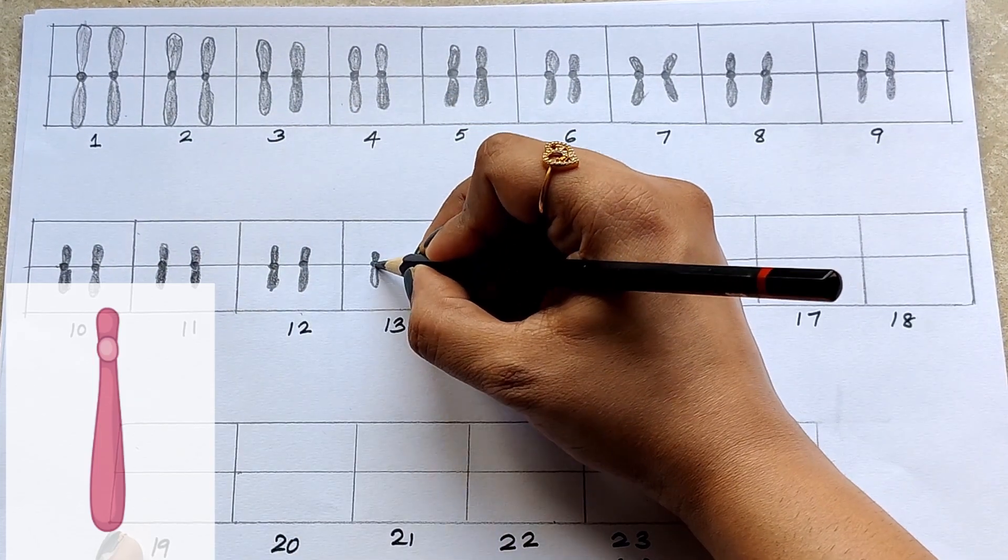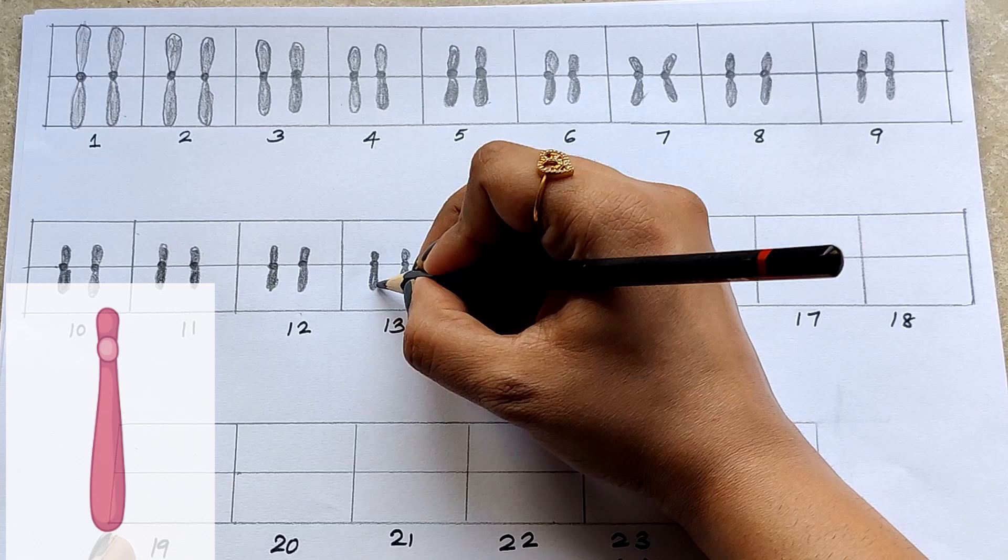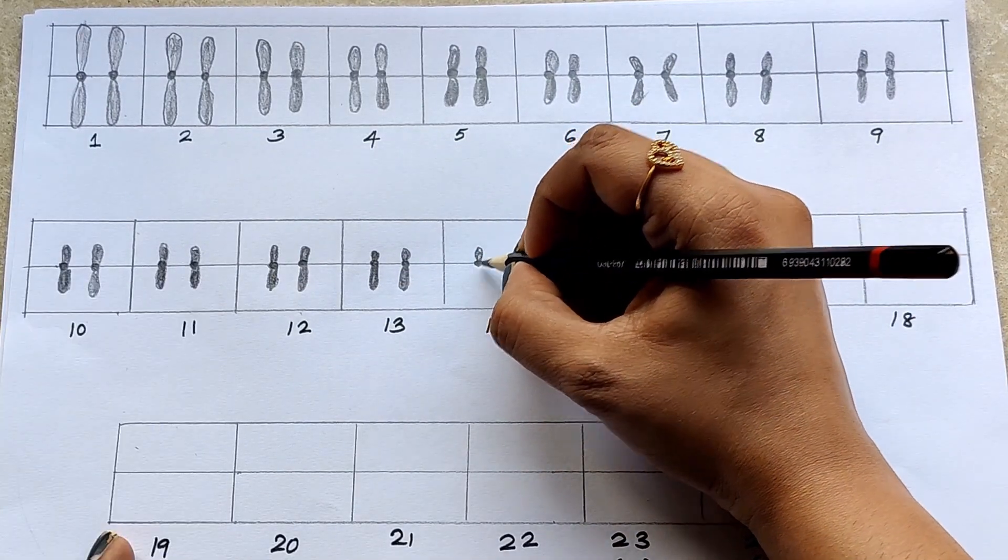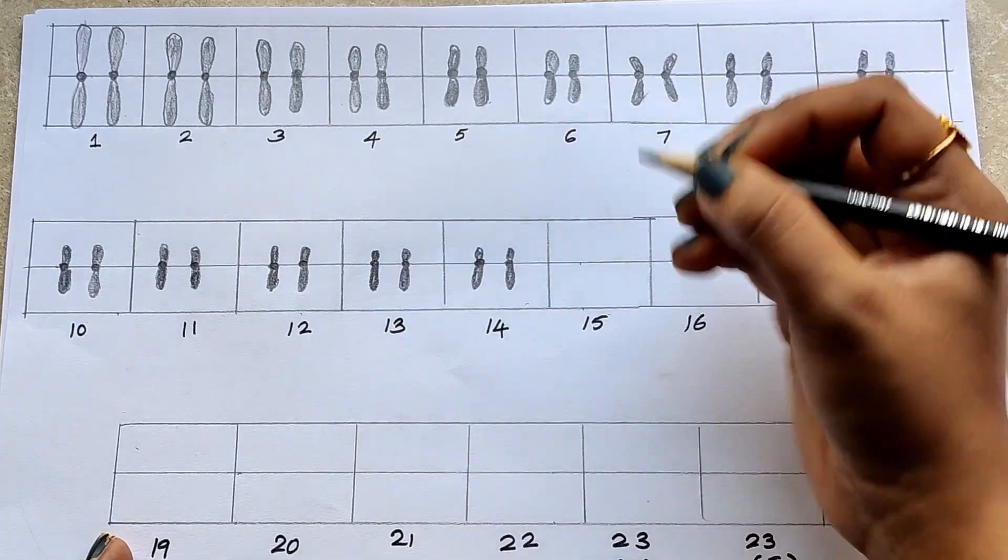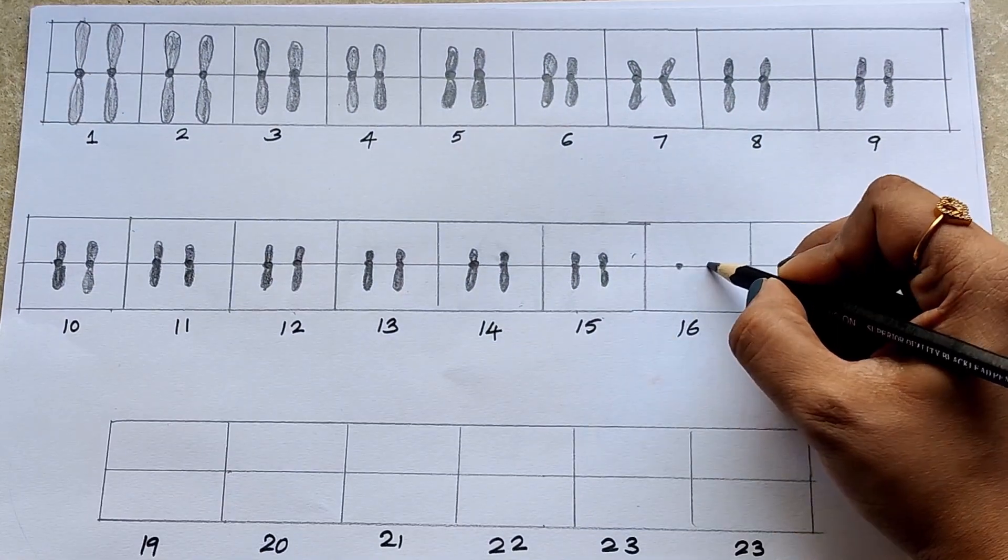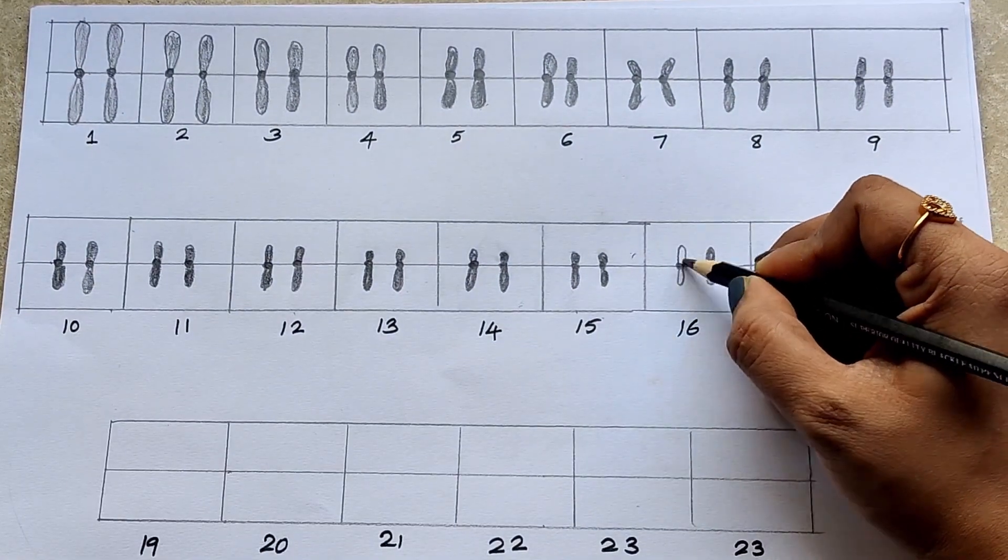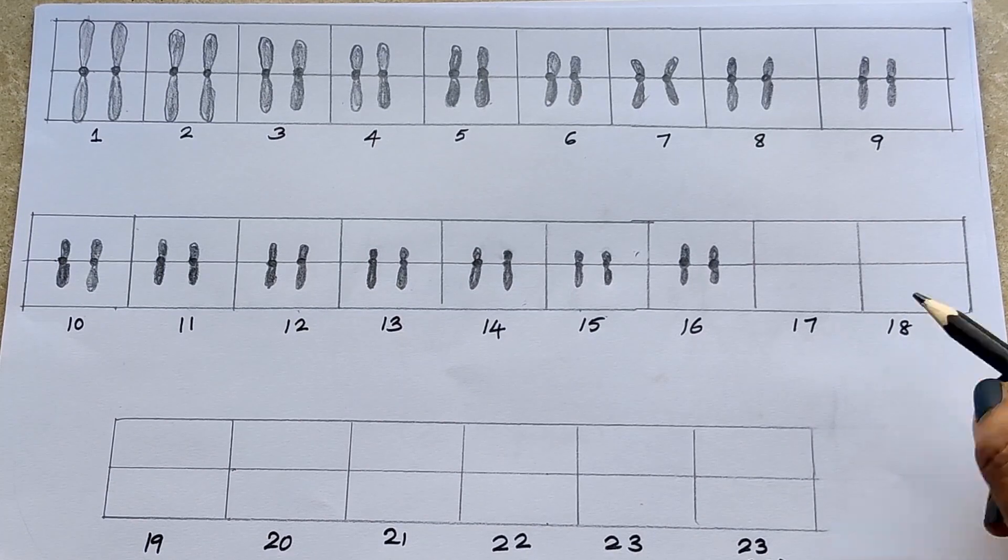13th, 14th and 15th are acrocentric. Here p-arm is very short as centromere is towards one of the ends.